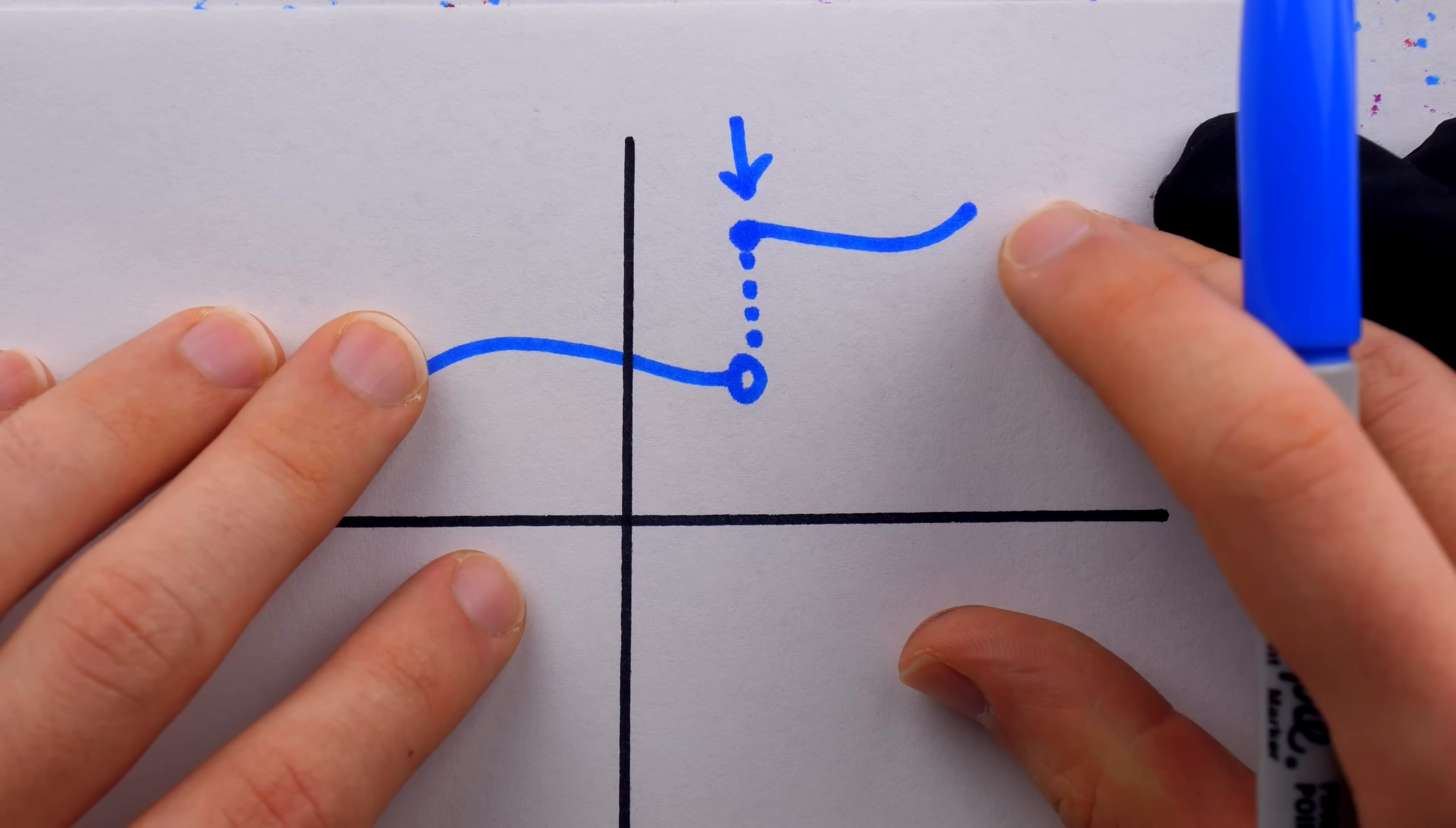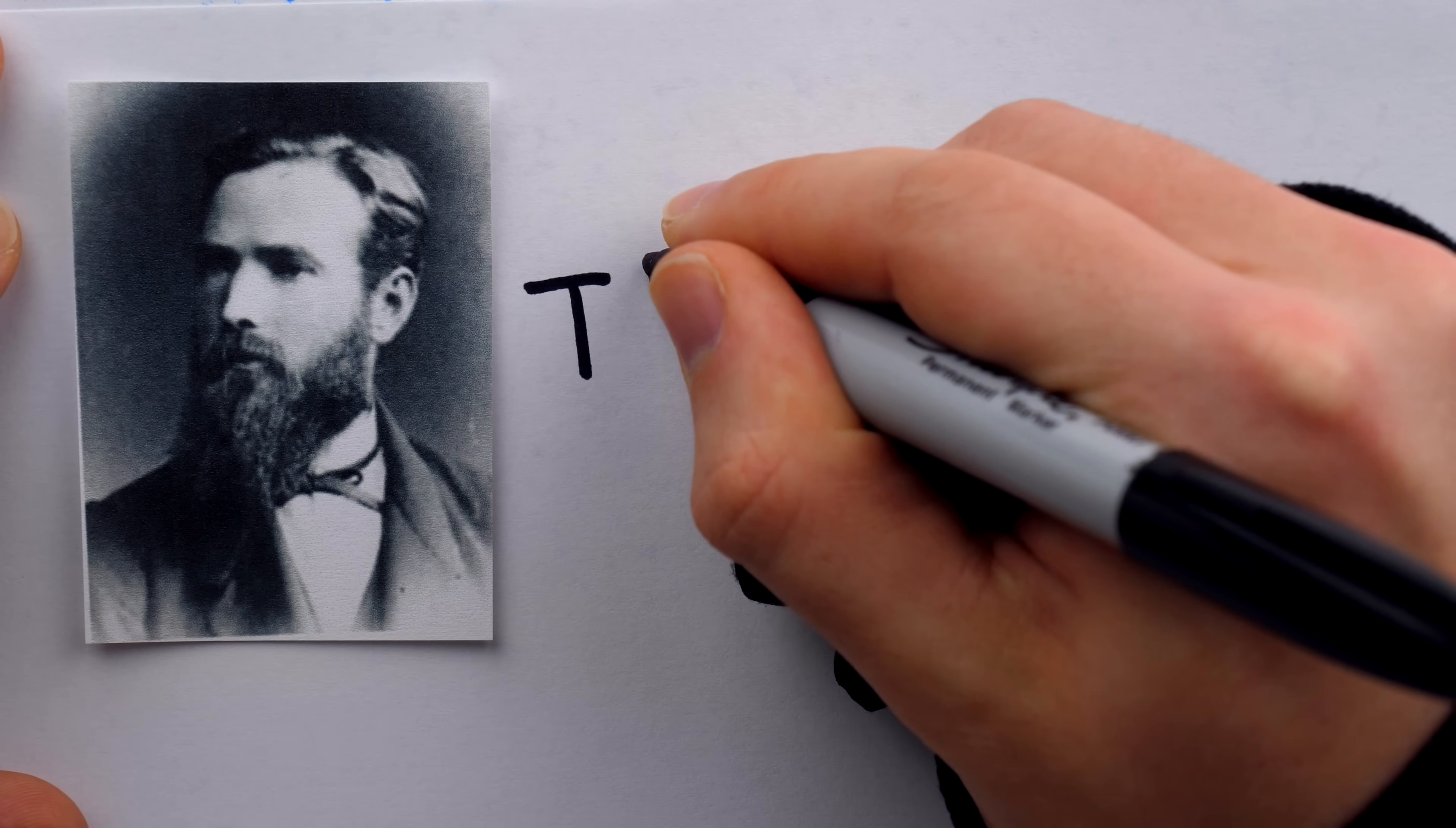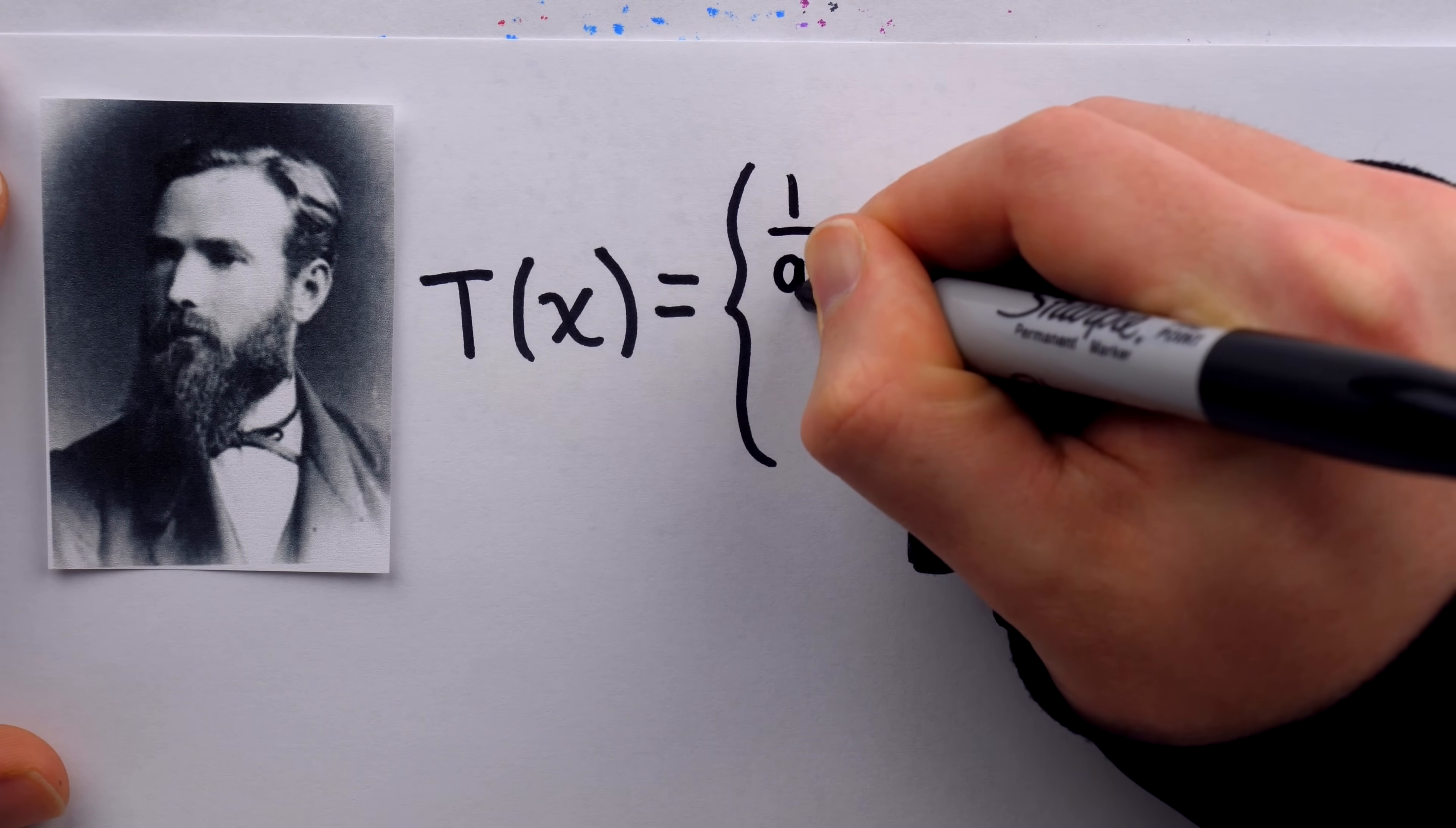But if a function is just a set of x-y pairs, how far could we push the ideas of continuity and discontinuity? Could we have a function that has infinitely many points of continuity and infinitely many points of discontinuity? In the 1800s, mathematician Carl Tomé said, yes we can. He gave this function as an example in a textbook.